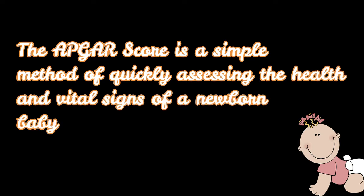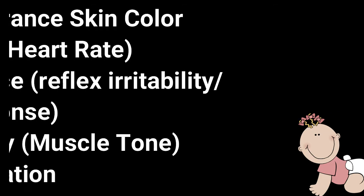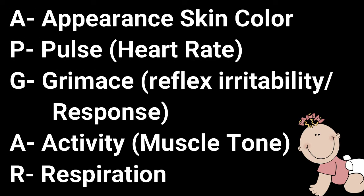The APGAR score is a simple method of quickly assessing the health and vital signs of a newborn baby after delivery. A stands for appearance of skin color, P for pulse or heart rate, G for grimace, reflex irritability or response, A for activity, muscle tone, and R for respiration.